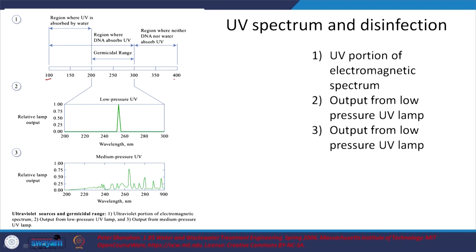Between 100–200 nm, UV is absorbed by water itself. Between 300–400 nm, neither DNA nor water absorb UV well. But between 200–300 nm is the germicidal range, where DNA and RNA absorb UV — leading to damage of RNA or DNA, which affects replication of the relevant pathogen. Low-pressure UV lamps emit monochromatically at 254 nm. Medium-pressure lamps emit over a range and are effective if pathogens absorb radiation at those different wavelengths.